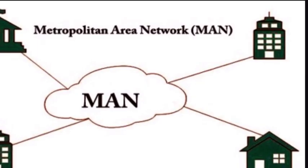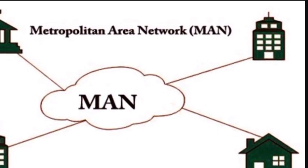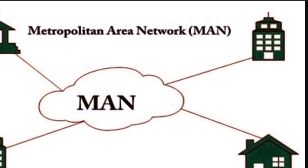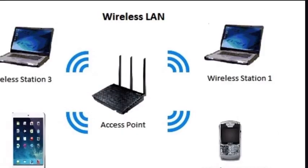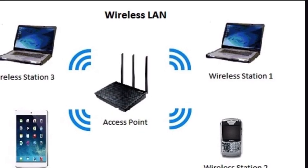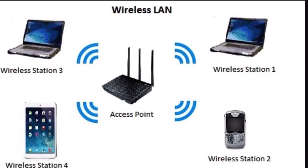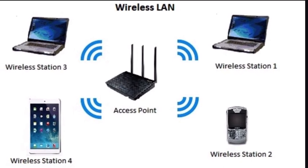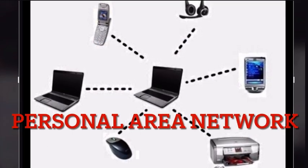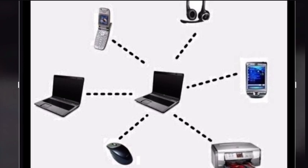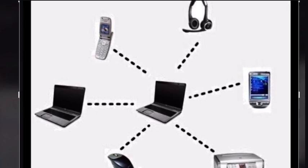Number three, the Metropolitan Area Network or MAN. MANs cover larger geographical areas than LANs but are smaller than WANs. They typically span a city and are used to connect multiple LANs. Number four, the wireless LAN or WLAN. Similar to a LAN but using wireless technologies like Wi-Fi for connectivity, allowing devices to connect without physical cables. Number five, the personal area network or PAN. A PAN is a small network for personal devices, typically within the range of an individual person, like connecting a smartphone to a laptop via Bluetooth.